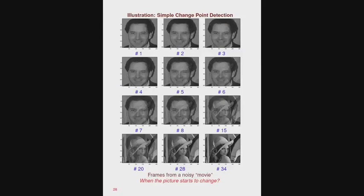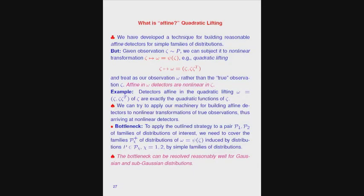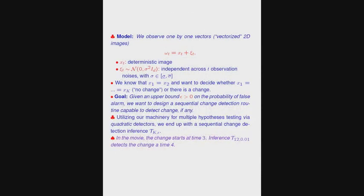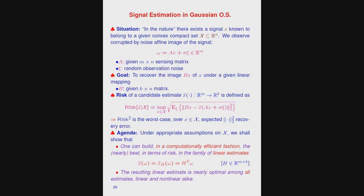For illustration, what you see here is a kind of movie — you see frames, perhaps many of you know who this person is, and everybody has seen this picture. Time passes from frame to frame and one picture starts to change. The question is: where does the change start? As far as the links between optimization and statistics are concerned, this is the most interesting part of the talk.